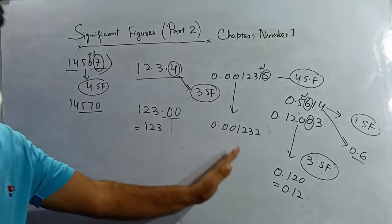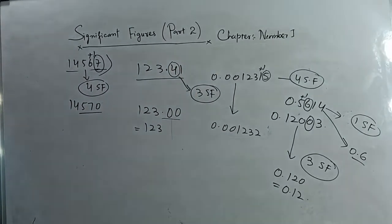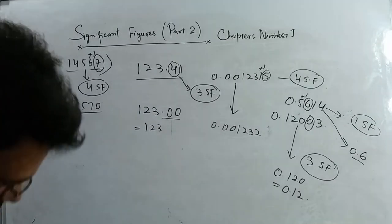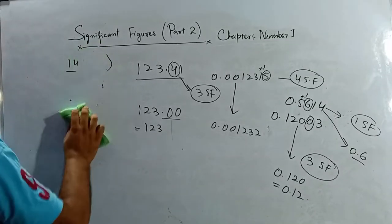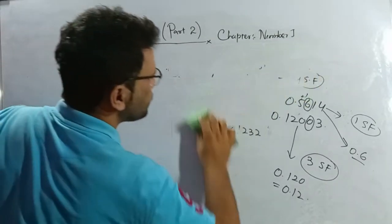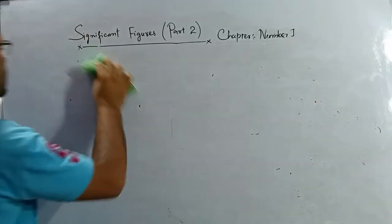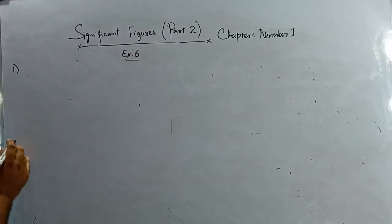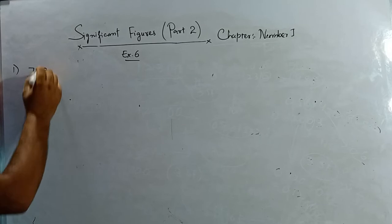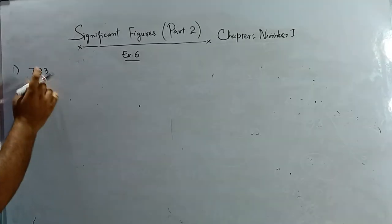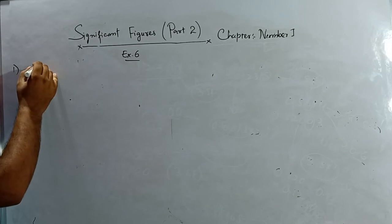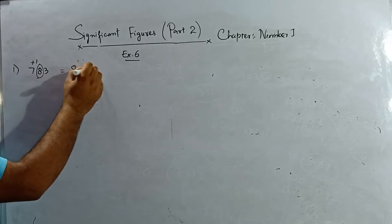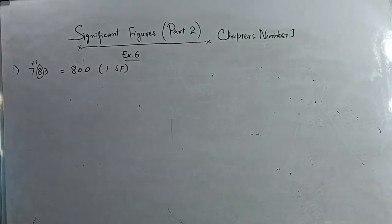Now coming to the exercise — page number 14 in your textbook. Exercise 6, question number 1: 783 rounded corrected to one significant figure. I check the second digit — it is greater than five, so I add one. The answer is 800, correct to one significant figure.